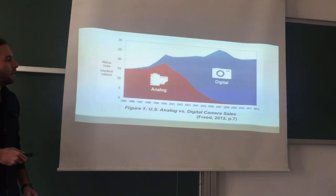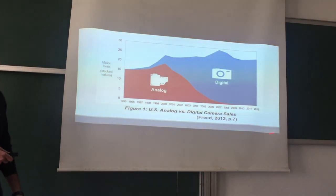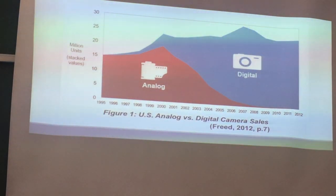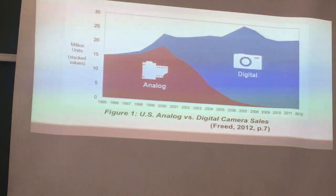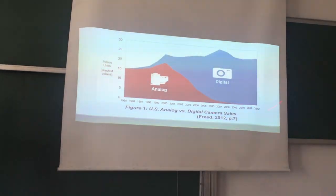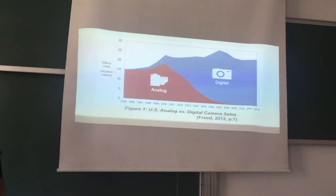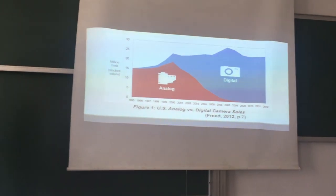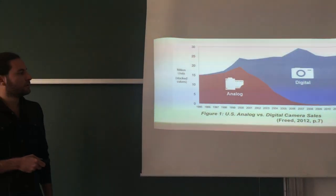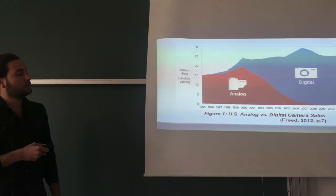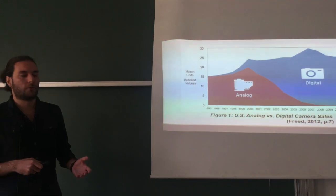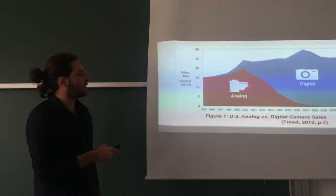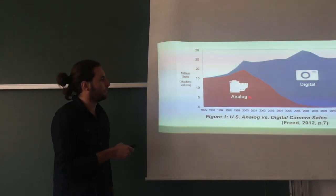The year 2012 was when Kodak went bankrupt. Even though this graph shows analog versus digital camera sales, it also resembles the dramatic decline of Kodak itself, especially reflected in the analog camera part.